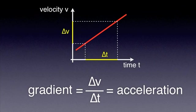In the example on the screen, the gradient of the graph is constant, which means that the acceleration is constant. In a more general case, the acceleration at a given point in time can be calculated by drawing the tangent to the graph at that point and then calculating the gradient of that tangent.